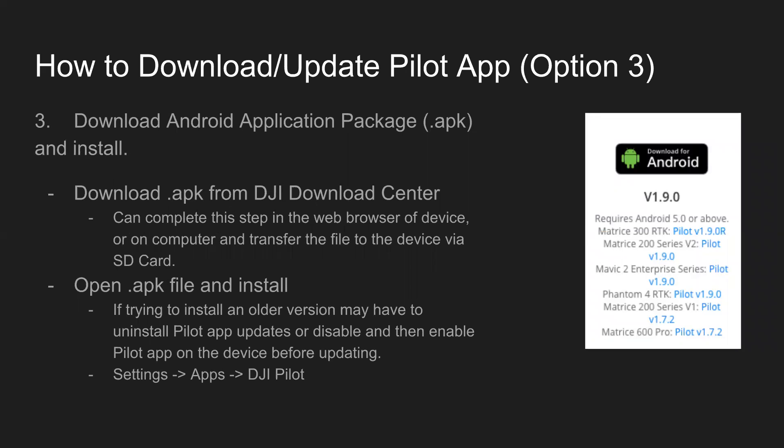Thirdly, you can go to the DJI website and download the APK file — Android Application Package. Just like you download an EXE file for installing a Windows program, APK is what it's called for Android. On the website, you can click on the blue Pilot link — Pilot 1.9.0 R or Pilot 1.9.0 — and it would download that APK to your computer. You could also download it directly on the Android device or Smart Controller Enterprise, or download it to your computer, put it on an SD card, and then install it from the SD card onto the device.